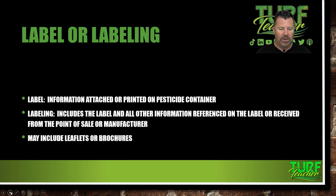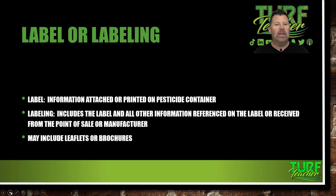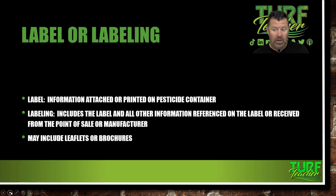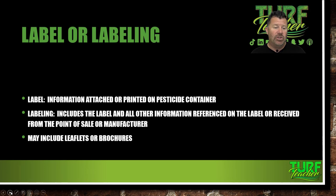Label and labeling. Label: information attached or printed on the pesticide container. What usually happens with these labels on containers — unfortunately they're going to get damaged. They're going to be in the back of a truck or a trailer. They're supposed to be locked in a container — either in your toolbox, a covered trailer, or a pull-behind tote. They are supposed to be locked to keep away from the general public and kids. Make sure you keep it locked up, not only for protection and safety, but those things cost money. You don't want somebody walking up to the back of your truck and stealing a two-and-a-half-gallon jug of Roundup.